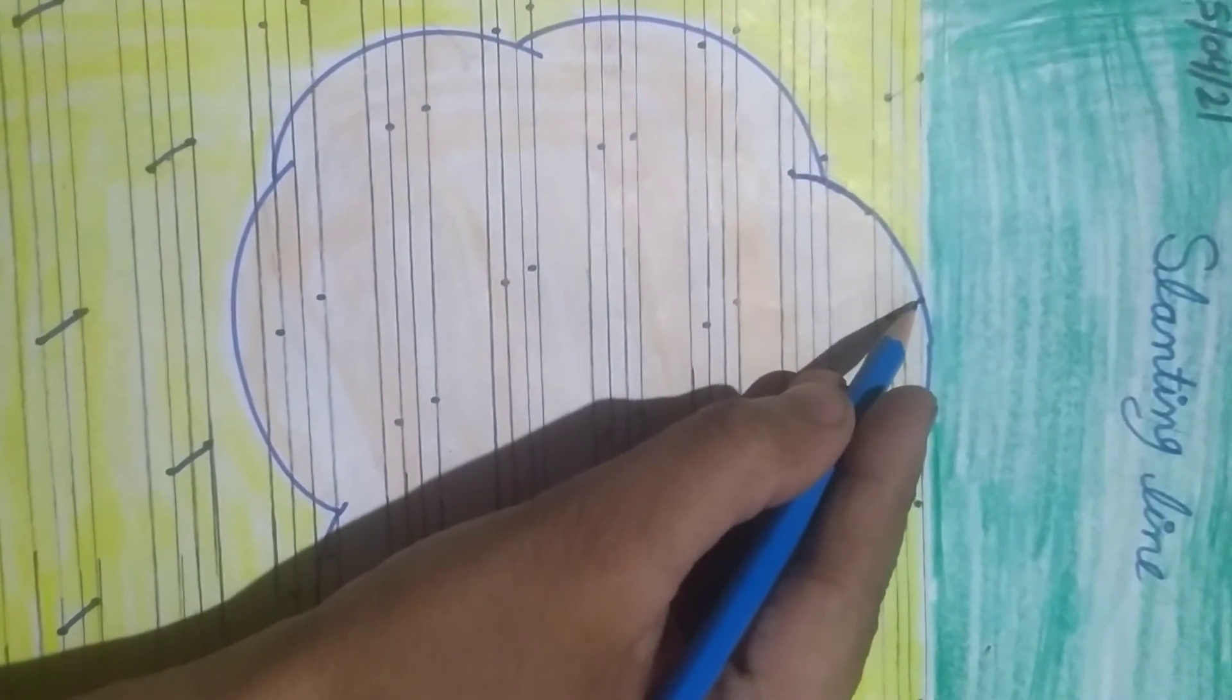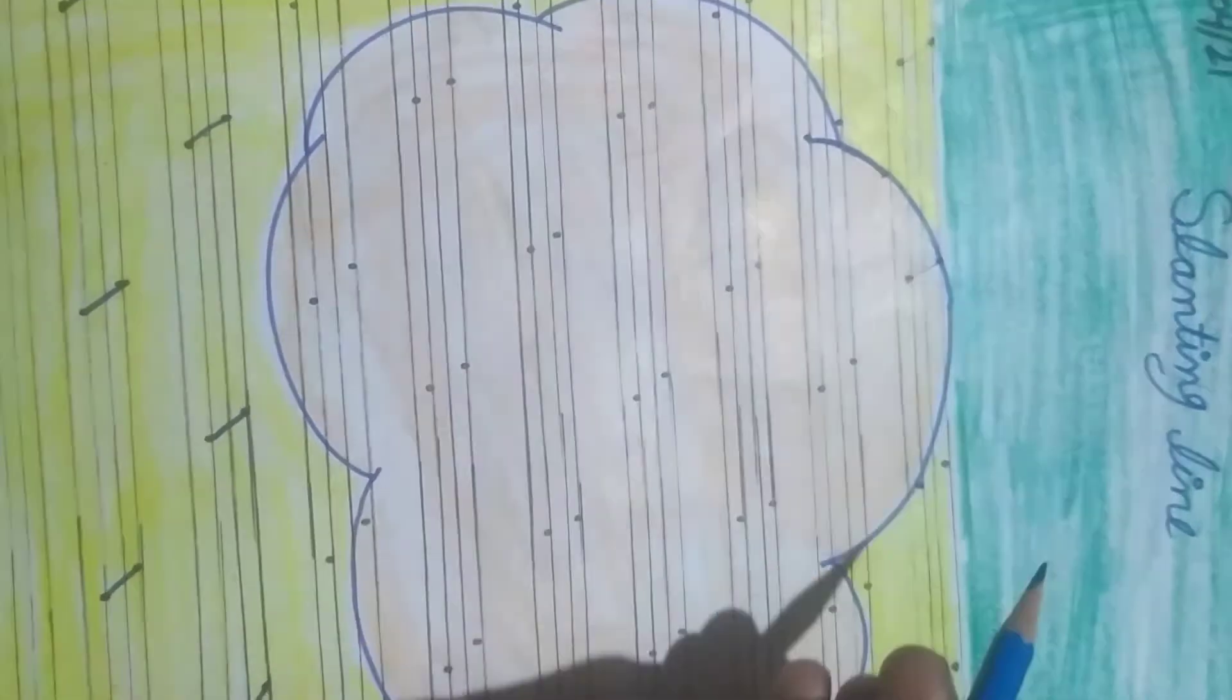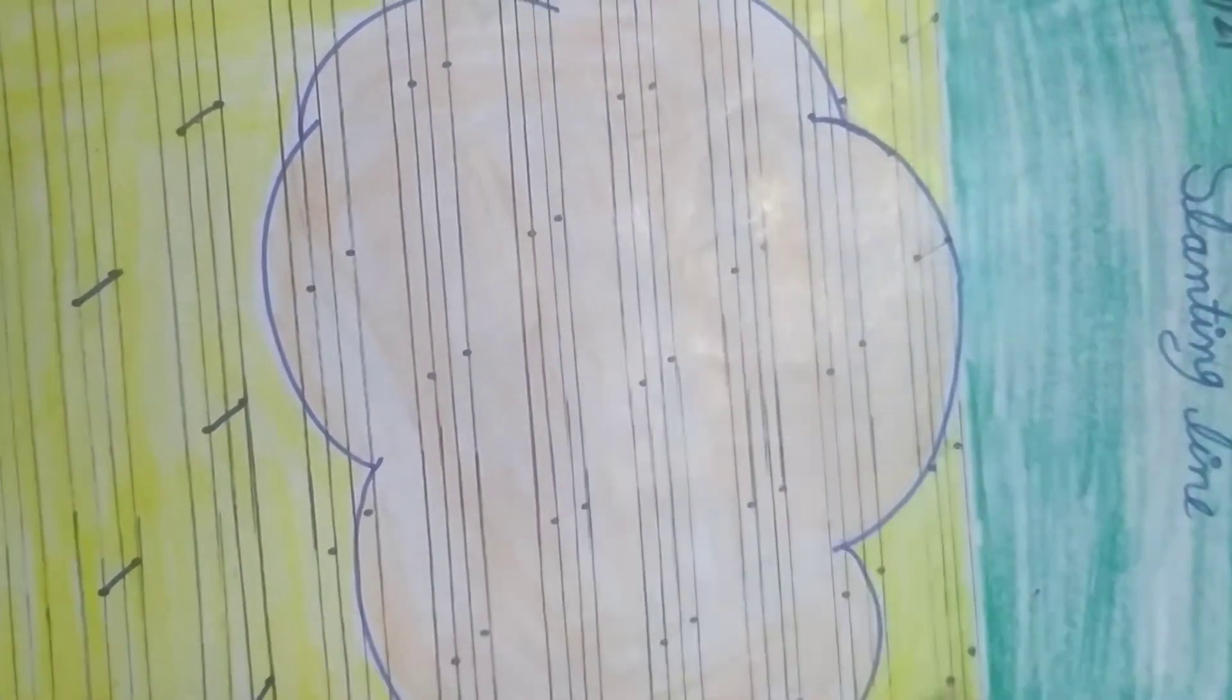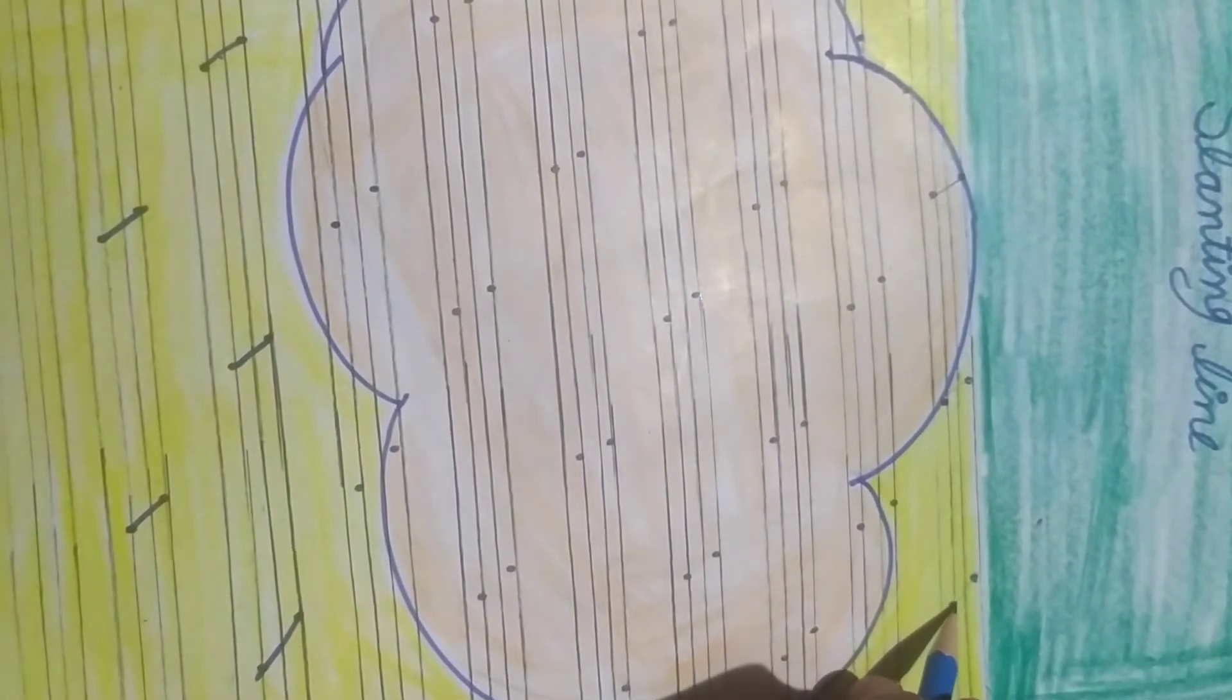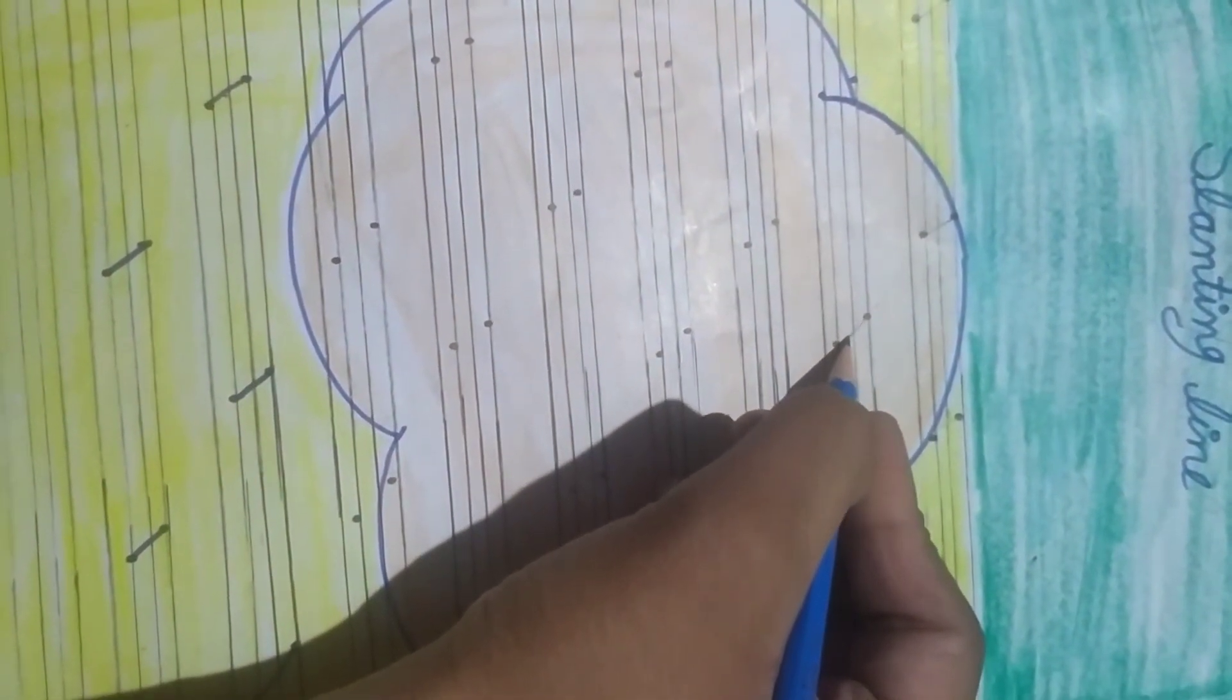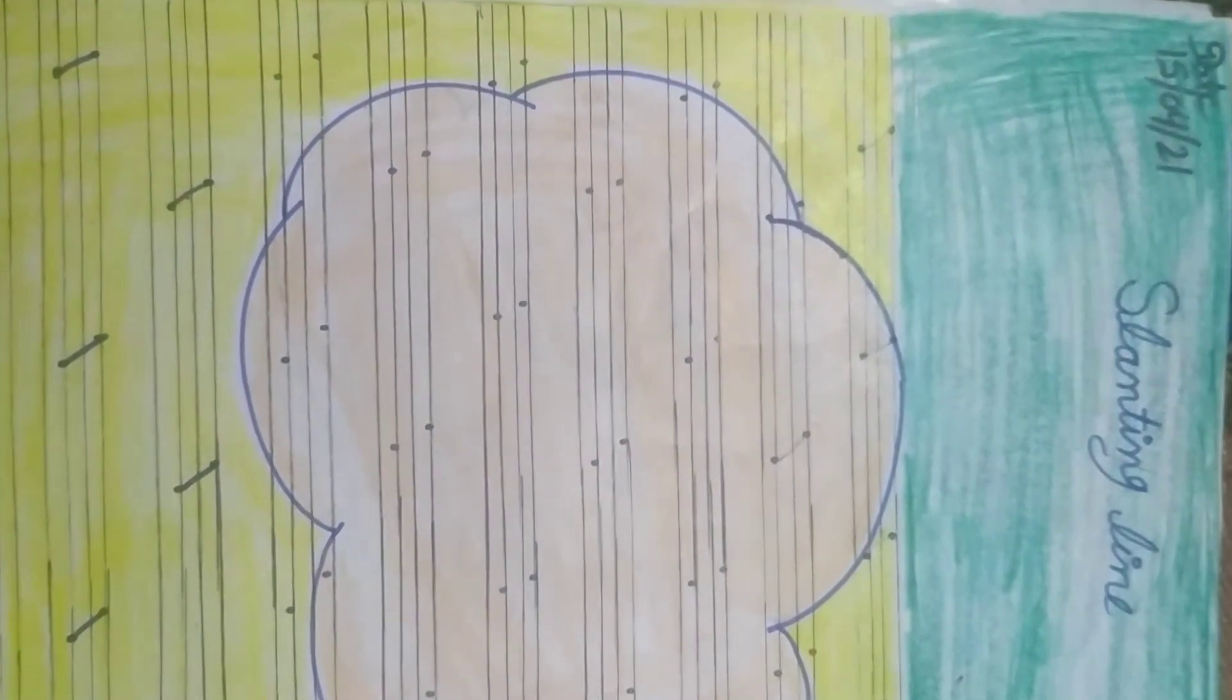Okay, so look here, ऐसे. Okay, ऐसे. ऐसे. Okay, बच्चों, यह देखिए, हमें यह dot से dot मिलानी है और इसको complete करना है.